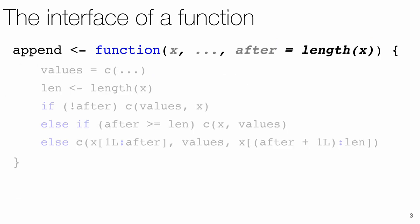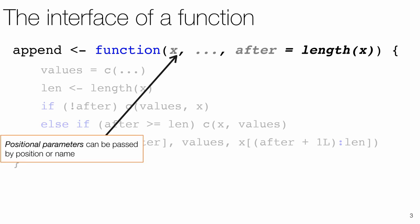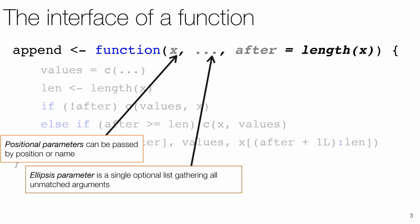Next, we look at the interface of a function. The append function takes a vector x and adds to it some values at position after. Functions can accept arguments by position, optionally with names. You can specify an optional ellipsis parameter, which will gather any extra arguments not matched by position or name.